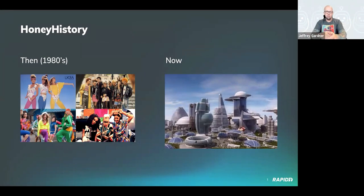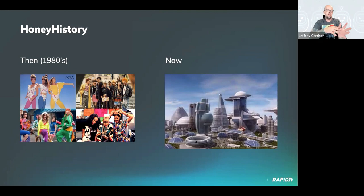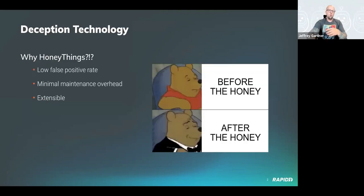Fast forward to today — the land of the future with flying cars and futuristic buildings — and we have a number of different open-source solutions available, including Calorie, HoneyPress, and a number of different styles of honey things.